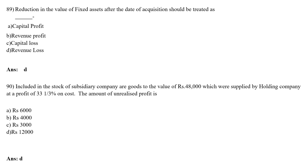Reduction in the value of fixed asset after the date of acquisition should be treated as: capital profit, revenue profit, capital loss, or revenue loss. The correct answer is Option D Revenue Loss. Included in the stock of subsidiary company are goods worth Rs.48,000 supplied by holding company at a profit of 33⅓ percent on cost. The amount of unrealized profit is Option D Rs.12,000. Calculation: Rs.48,000 × 33⅓ ÷ 133⅓ = Rs.12,000.